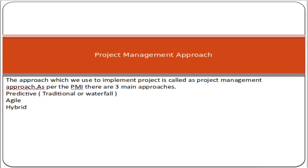Let's start. First of all, we have to understand what a project management approach is. Basically, a project management approach means the approach which we use to manage or implement a project. Whenever we are doing something, we must have a mindset and an approach. Normally we use standard approaches for the implementation of a project. As per the latest PMBOK edition of 2021, there are three main approaches defined for managing projects.